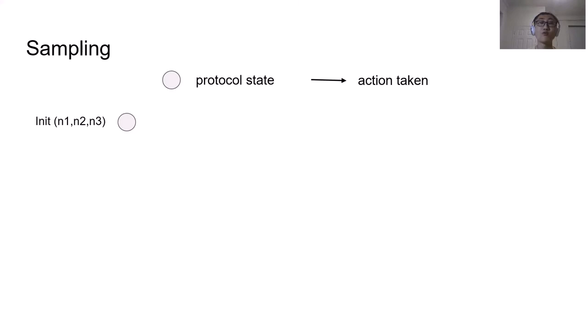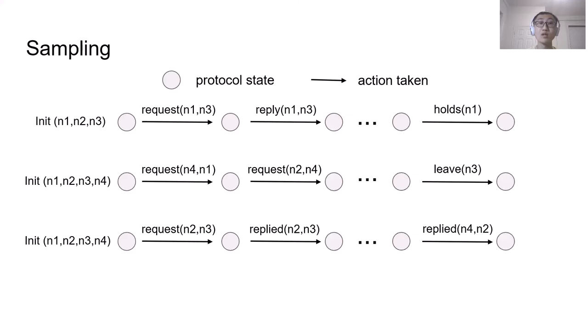Given the distributed protocol, we'll first randomly choose an initial state, that is an instance size. For example, here we can choose a three-node instance. And then each time, we choose an action to take. And we repeatedly do this until the protocol terminates. And then we choose another instance size, and simulate a protocol again. And we continue doing this. And these protocol states, we call them samples.